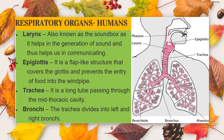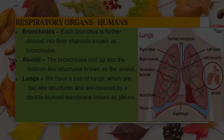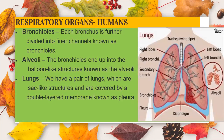The trachea is a long tube passing through the mid thoracic cavity. The air from nasal passages reaches the lungs through the trachea. The trachea divides into left and right bronchus — plural bronchi — which enter the respective lungs. Inside the lungs, the bronchi divide and further re-divide into finer channels known as bronchioles.